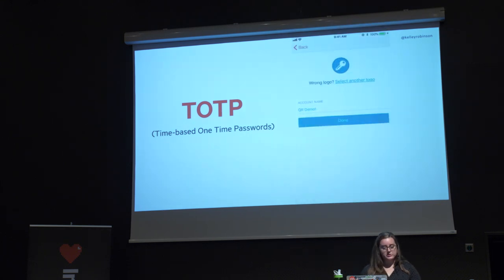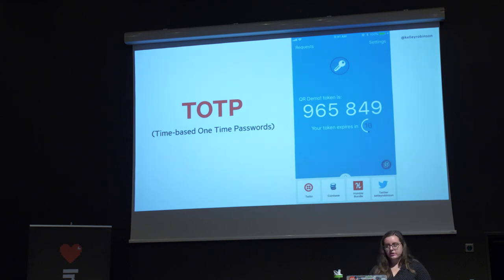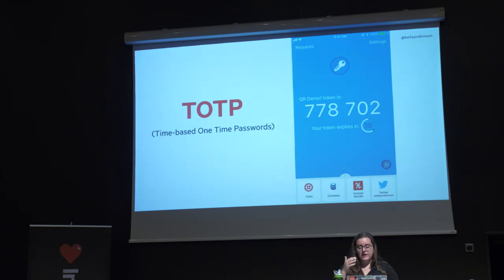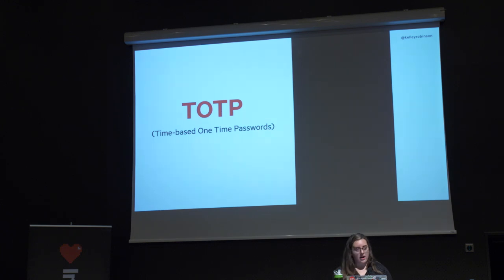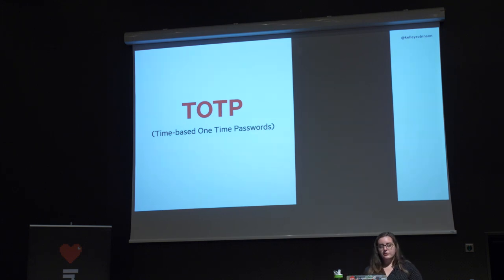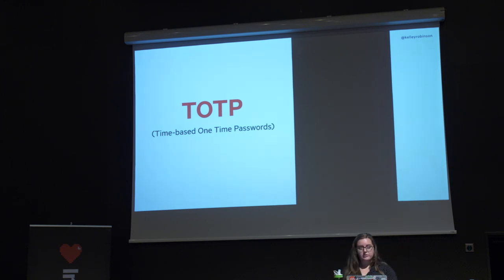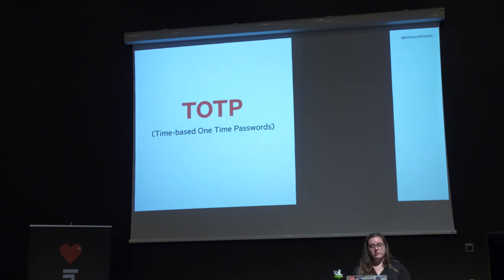TOTPs — time-based one-time passwords — are becoming more familiar to users. You scan a QR code and get a counting-down token on your device. This is an app-based method that's a bit easier for users to understand, mostly because it's been around a little longer. The app Google Authenticator is how you would use TOTPs. This is a standardized method — there's an RFC for it — and most of the time when you see 'scan this with Google Authenticator,' you can also use an app like Authy.